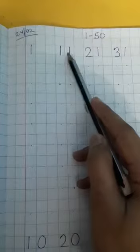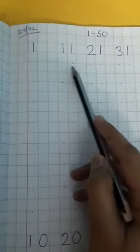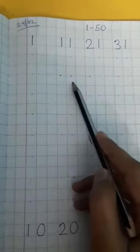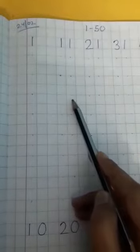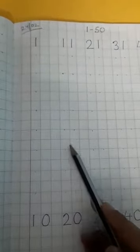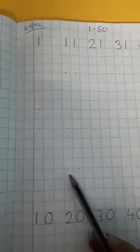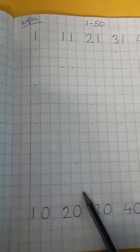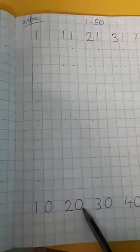Here is 11. You have to write 12, 13, 14, 15, 16, 17, 18, 19, and 20.